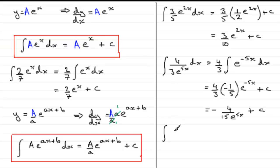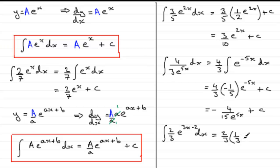Now this one: the integral of two-thirds e to the power 3x minus 2, integrated with respect to x. Here the b value is minus 2, unlike the previous examples. We get the constant two-thirds, and using the rule we multiply by one-third — that's 1 over the little a of 3 — times e to the power 3x minus 2, plus c. Multiplying out, we get two-ninths e to the power 3x minus 2 plus the constant c.